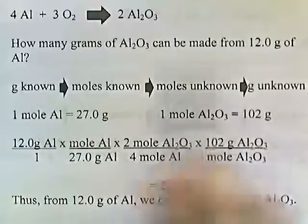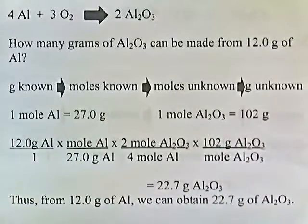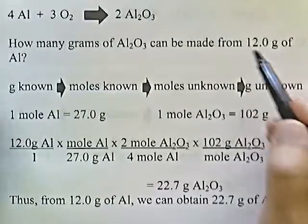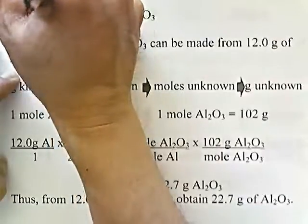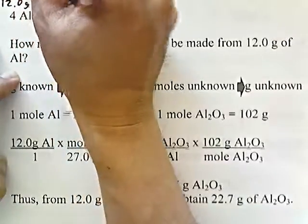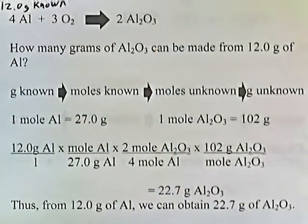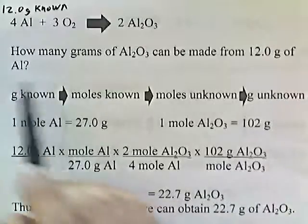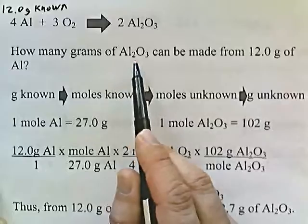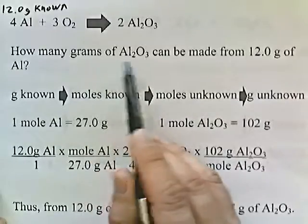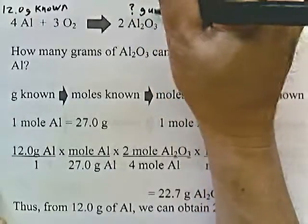Here's the equation rewritten and here's the question again. First we need to identify the known and the unknown. 12 grams of aluminum — that's the known. The known is the element where they tell you the quantity that exists, so since they tell you you have 12 grams of aluminum, aluminum is the known. How many grams of aluminum oxide? They're asking for grams of aluminum oxide — this is the unknown.